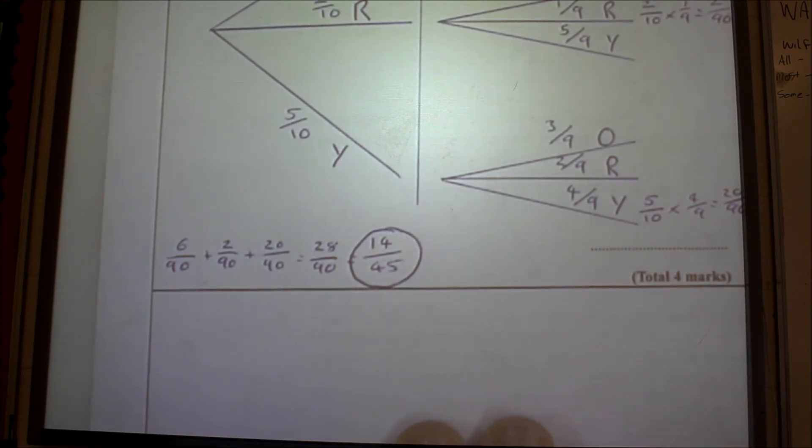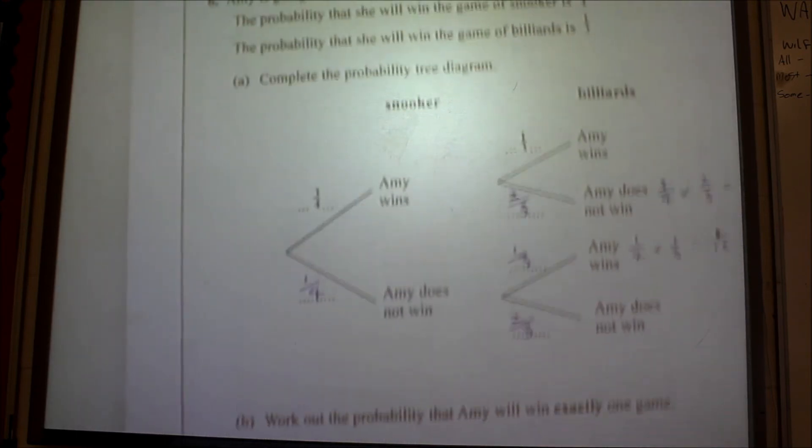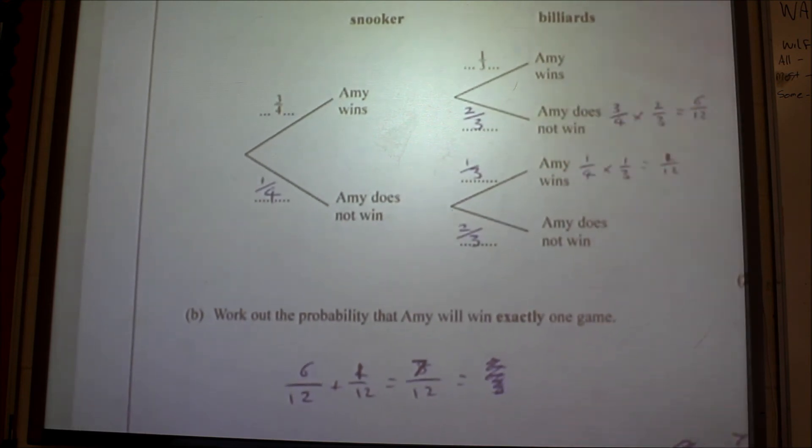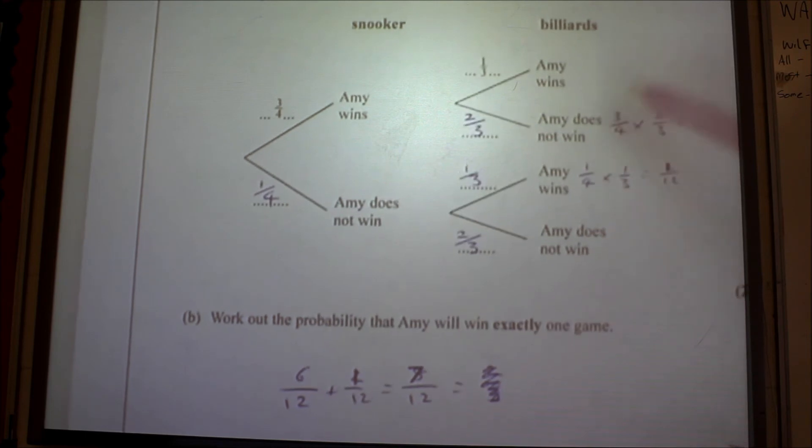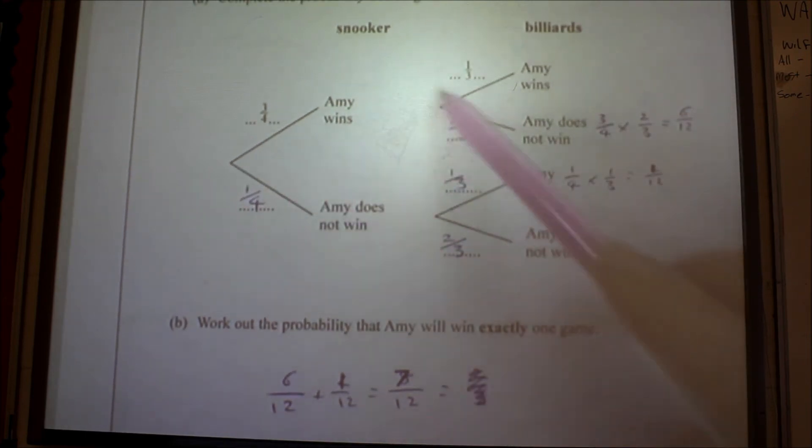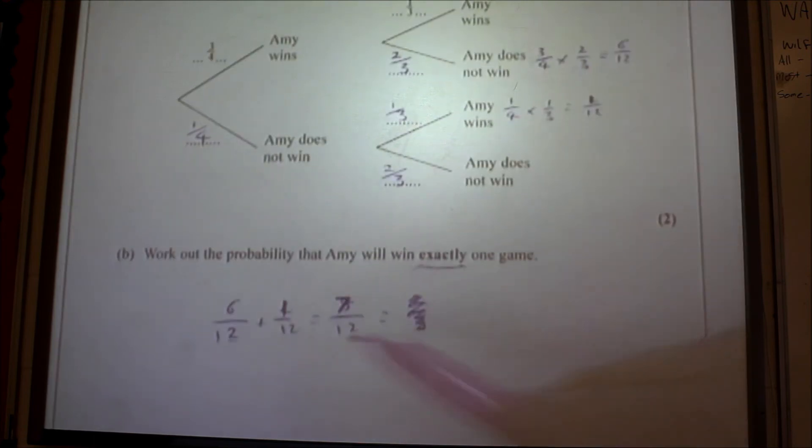Question six. Amy's going to play one game of snooker and one game of billiards. Complete the scores for her winning. You should be all right with that. Work out the probability that she wins exactly one game. So it's a win and it does not win, or does not win and a win, because it says she'll win exactly one game. So it's six over twelve add one over twelve is seven over twelve. So that is your answer.